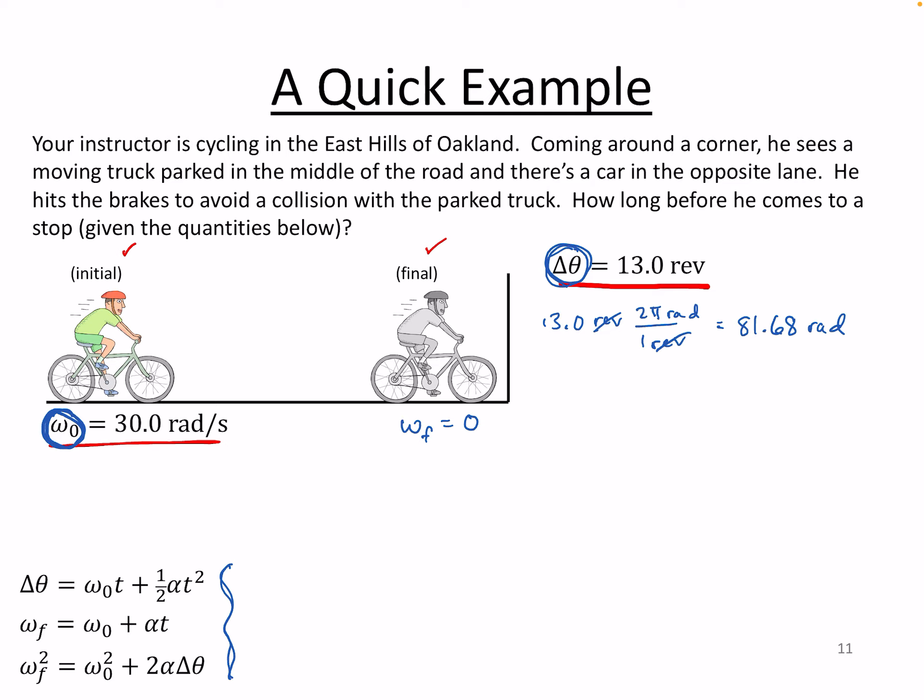So if we look at the equations of motion that we have here, and the knowns that we have, and the thing that we're looking for, which is time, well, they only really have a couple of options. And you can go about this a couple of different ways, but there's no direct route with the equations of motion that we're seeing here. We first have to go and find the angular acceleration, which if we solve the second equation of motion for that, then we have this equation.